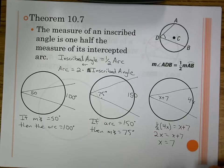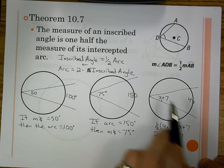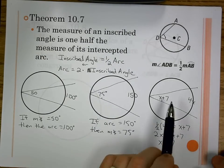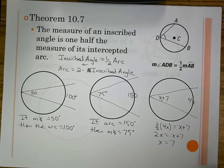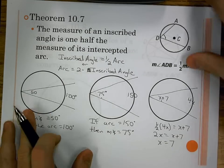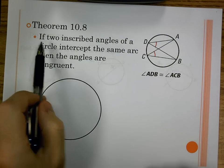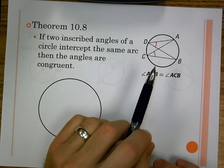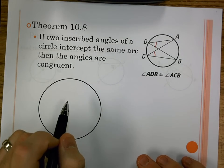If we check: x equals 7 means the angle is 14 and the arc is 28. Now, before practice problems, let's look at another theorem. Theorem 10.8 says: if two inscribed angles of a circle intercept the same arc, then the angles are congruent.